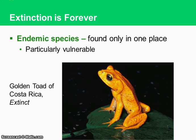Extinction is forever — once a species goes extinct, we're done. An endemic species is found only in one place, and these are particularly vulnerable. There are several hot spots around the world with high rates of endemic species, like tropical rainforests and the Hawaiian island chains. To conserve these hot spots, they use what we call umbrella policies — they'll protect one keystone species, and by doing that, several other species are protected as a result of protecting that major species. So, extinction is forever, and you want to do things to try to not play into the extinction factor.